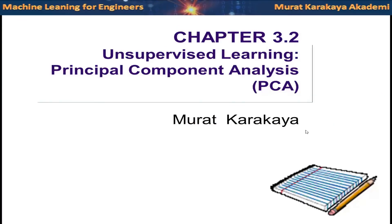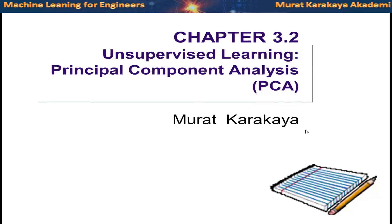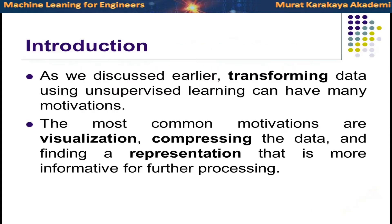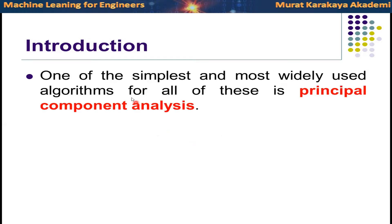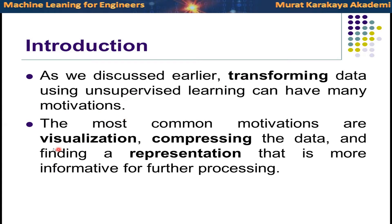Today we are going to talk about Principal Component Analysis, or PCA. PCA is an unsupervised learning method we use a lot. Unsupervised methods are used in two or three ways: the first is transforming data, the second is visualization of data, and the third is mostly clustering the data. Transforming means we are going to change the representation of the data. PCA is mostly about transformation of the data, and we can also use PCA to visualize the data.